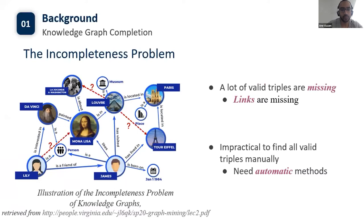Real world knowledge graphs often suffer from the incompleteness problem. That is to say, a lot of valid triples or links in knowledge graphs are missing. For example, in the figure on the left, Lily also likes Mona Lisa in the real world, but such a triple is not included in the graph. Obviously, it is impractical to find all missing links in knowledge graphs manually due to the large scale. So automatic knowledge graph completion has become popular in recent years.